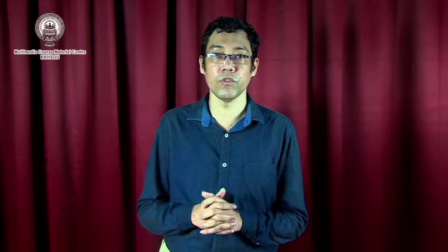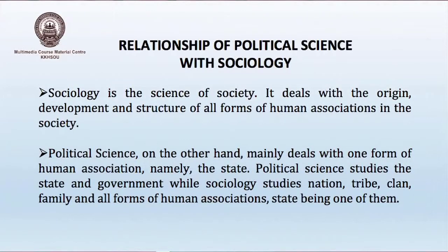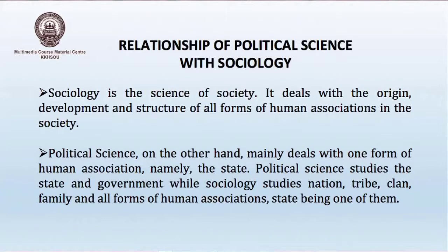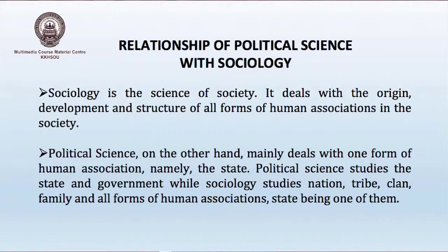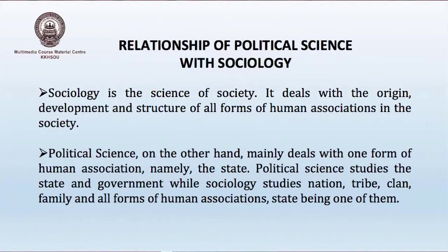First, let us focus on the relationship of political science with sociology. Sociology is the science of society. It deals with the origin, development and structure of all forms of human associations in the society. Political science, on the other hand, mainly deals with one form of human association, namely the state. Political science studies the state and government, while sociology studies nation, tribe, clan, family and all forms of human associations, the state being one of them.